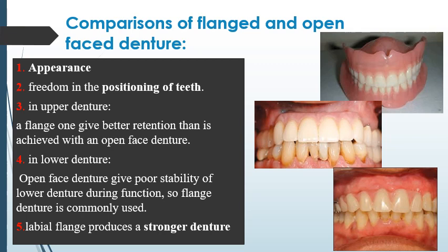Comparing flanged and open-faced dentures: first, appearance differs; second, there is freedom in the positioning of teeth. In the upper denture, a flanged type gives better retention than an open-faced denture. In the lower denture, an open-faced denture gives poor stability during function, so a flanged denture is commonly used in the lower arch. A labial flange also produces a stronger denture.